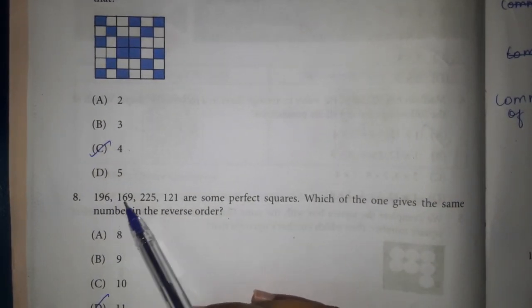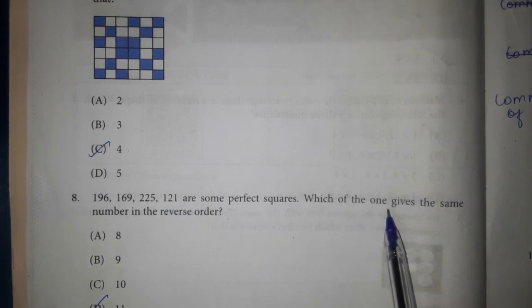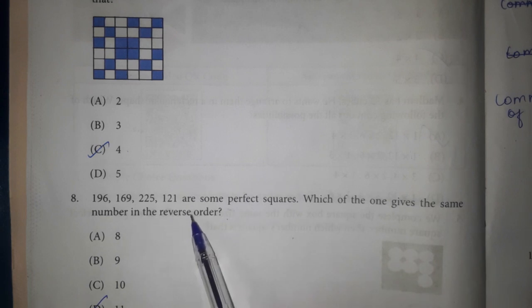8th one. 196, 169, 225, 121 are some perfect squares. Which of the one gives the same number in the reverse order? Reverse order, we get palindrome, and put a square number. What do we need to call?